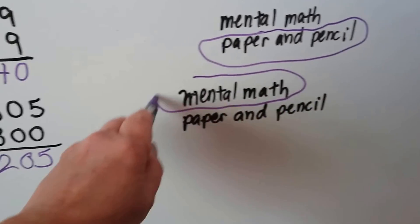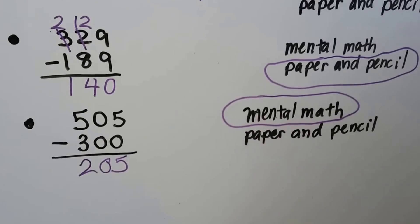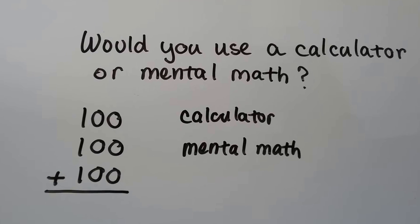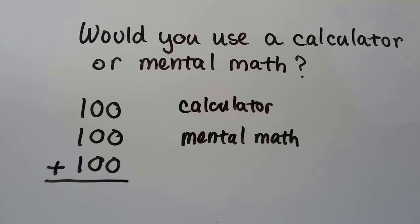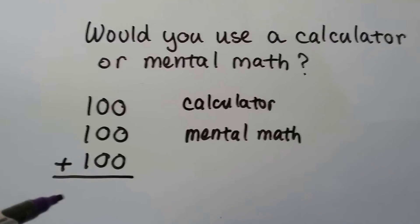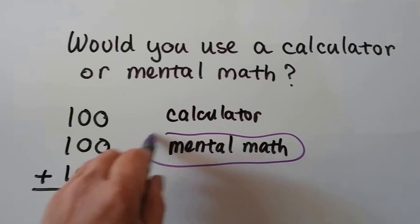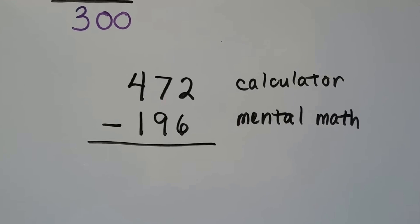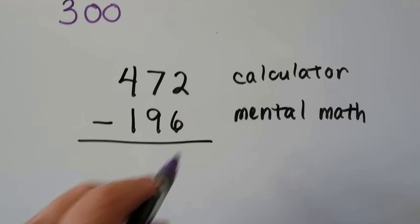You could use pencil and paper if you need to, but when you get good at adding and subtracting you can do mental math. How about this - would you use a calculator or mental math to add 100 plus 100 plus 100? That's one plus one plus one, which would be 300, so mental math is the best choice. But for the next problem with more difficult numbers, I'd probably use a calculator.